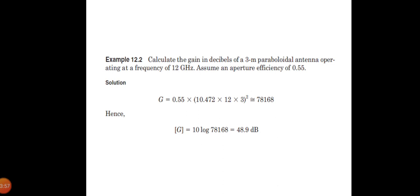To specify G in decibels, take 10 log of the answer. Multiplying the log of the answer by 10, you will get the gain as 48.9 dB.